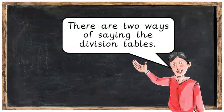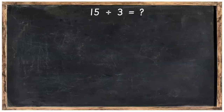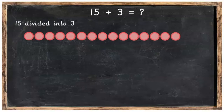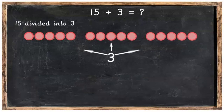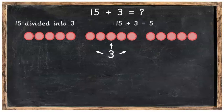There are two ways of saying the division tables. If we take 15 divided by 3, we can either say 15 divided into 3 equal parts. Here we have 15 and we divide it into 3 equal parts and there will be 5 in each part, so 15 divided by 3 is equal to 5.